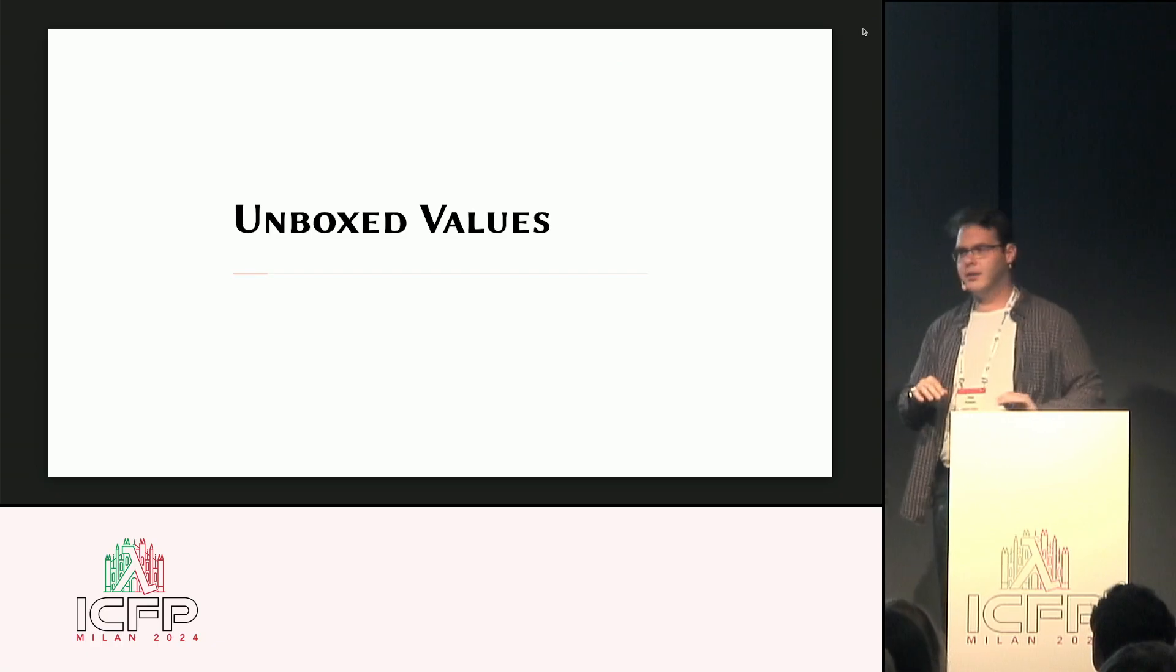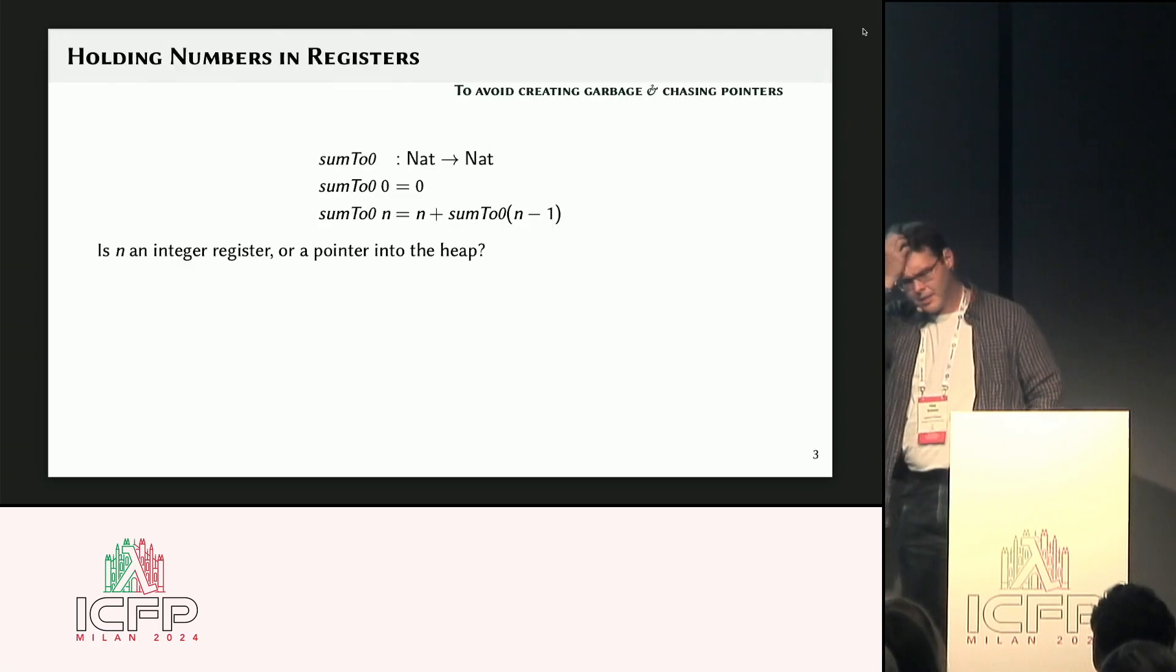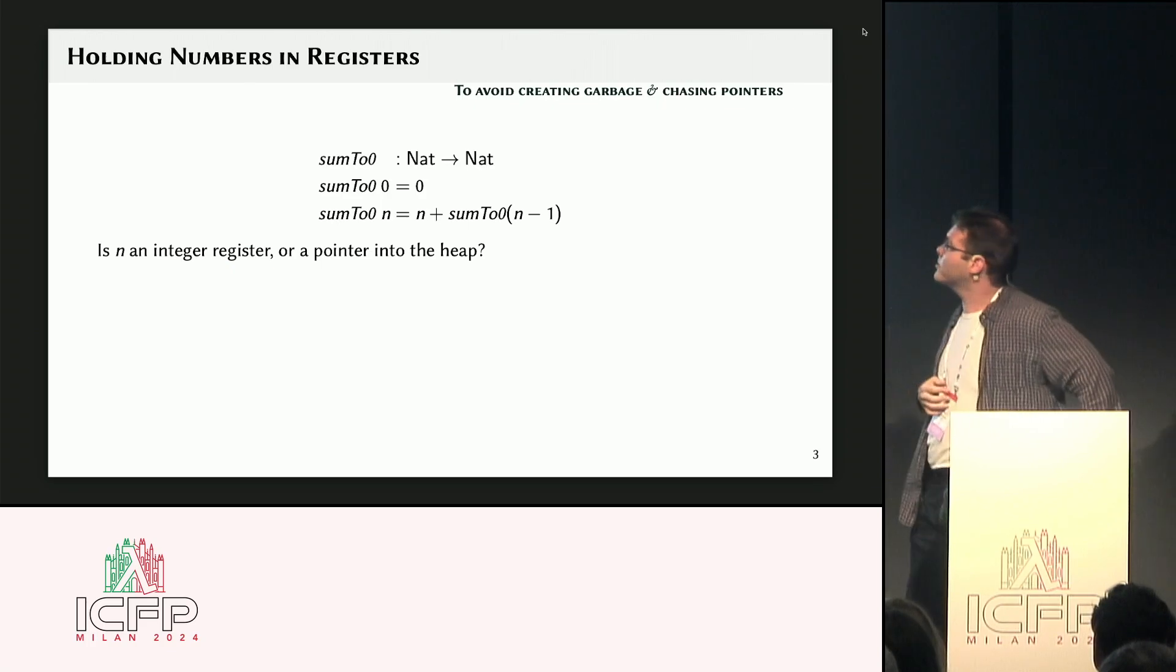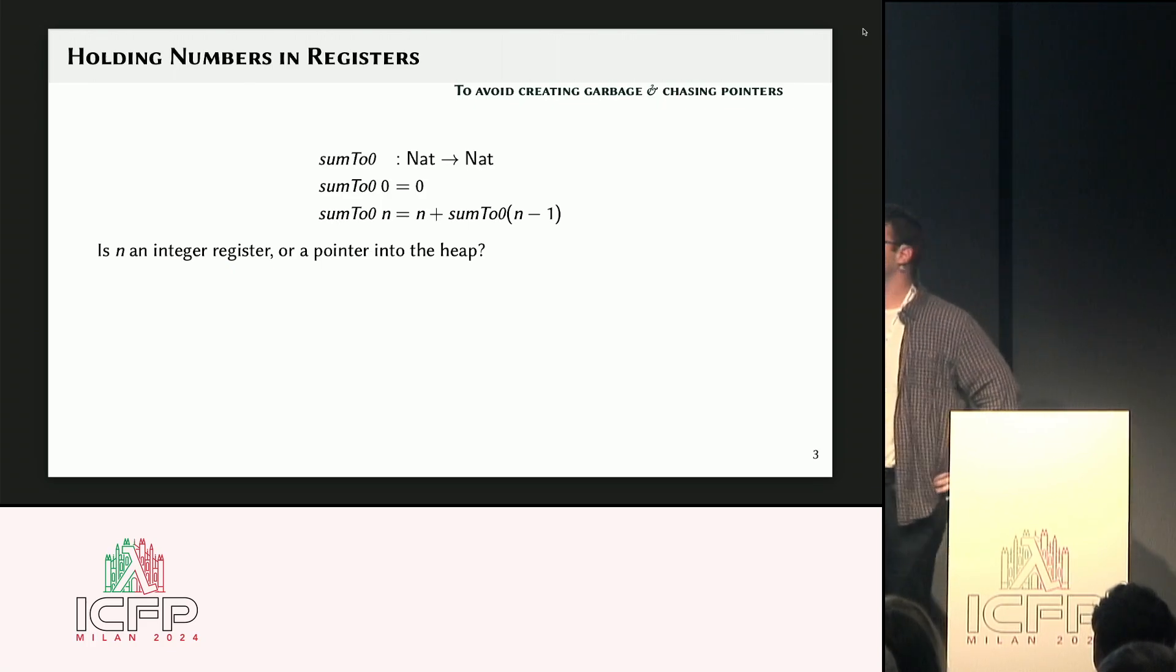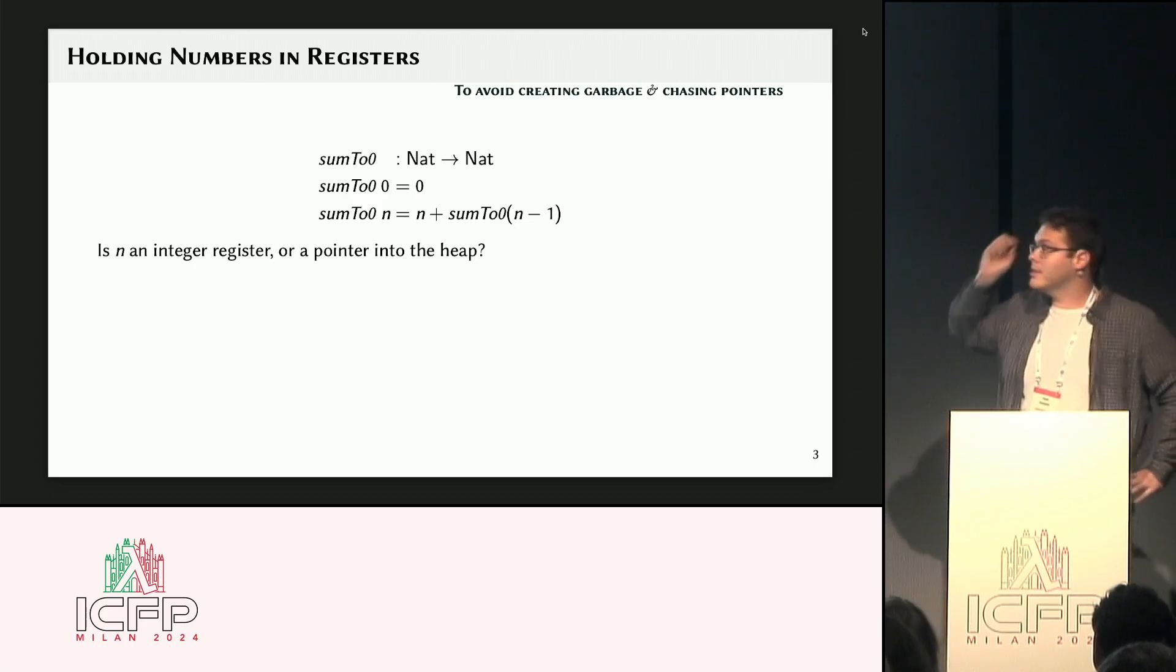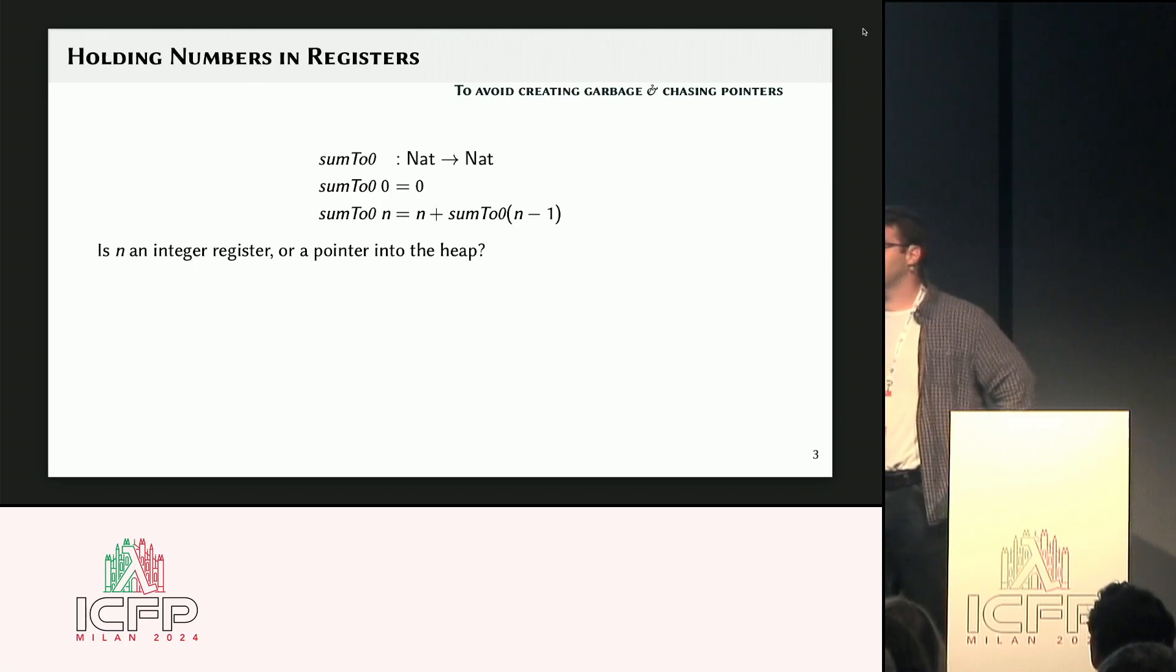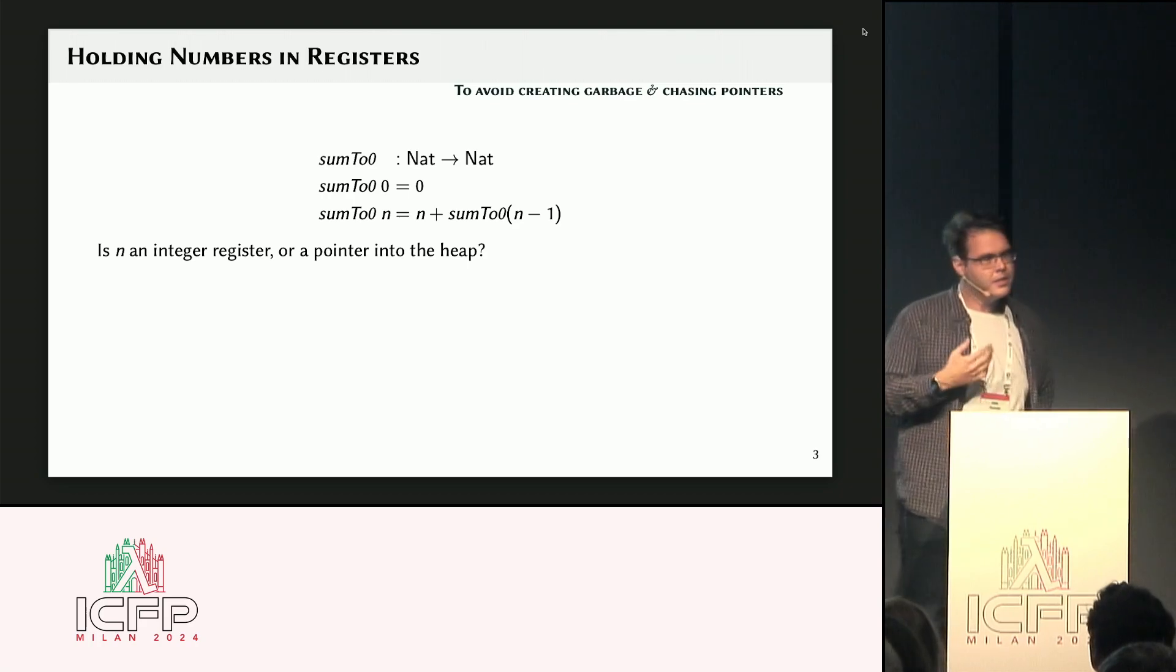Okay. So, let's start out with, kind of, an introduction on, you know, how to deal with unboxed values and why they're important. So here's, like, a really small, simple function I want to say. Let's sum up all the numbers down to zero. And a big question is, n is a number, does it live... Where does it live? Is it in the register or in the heap? Right? And what's the impact of that?